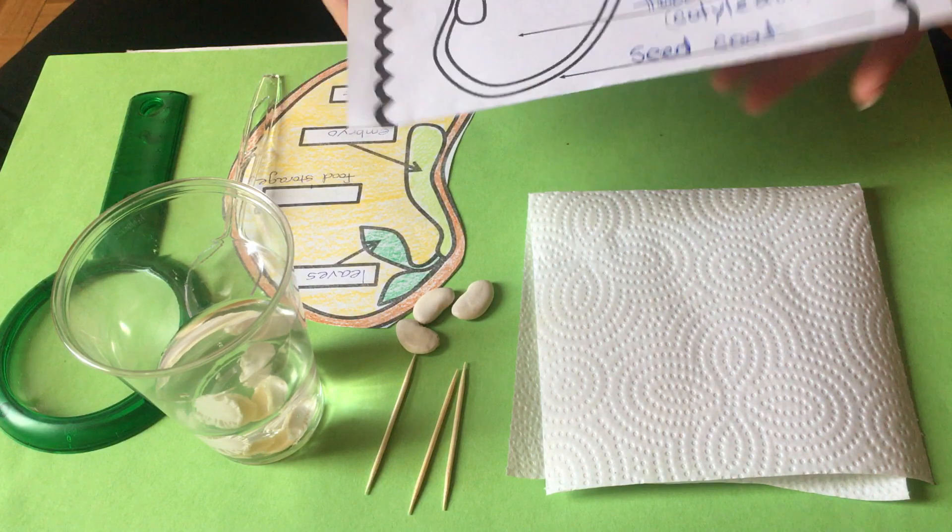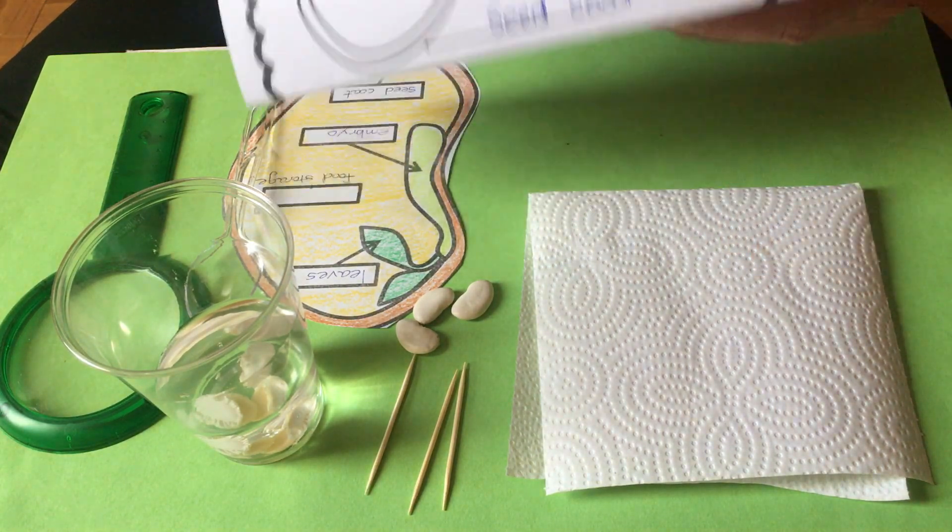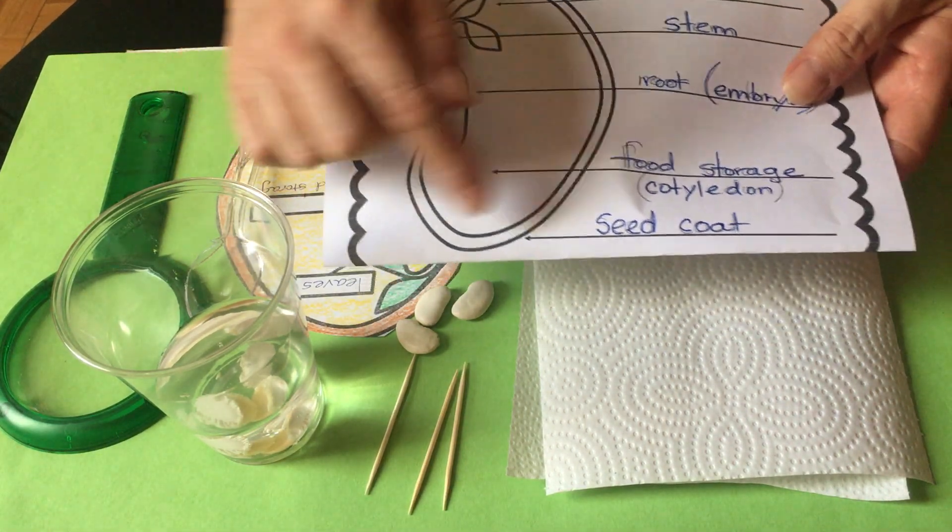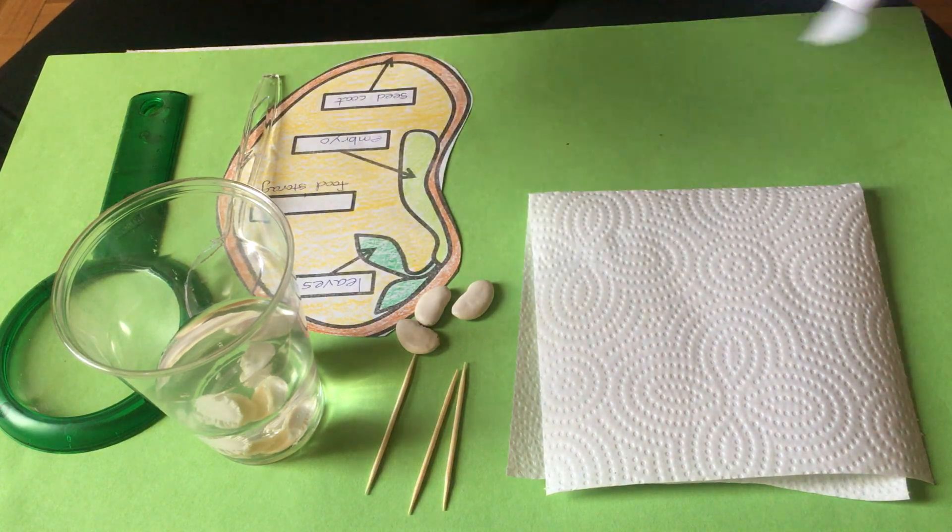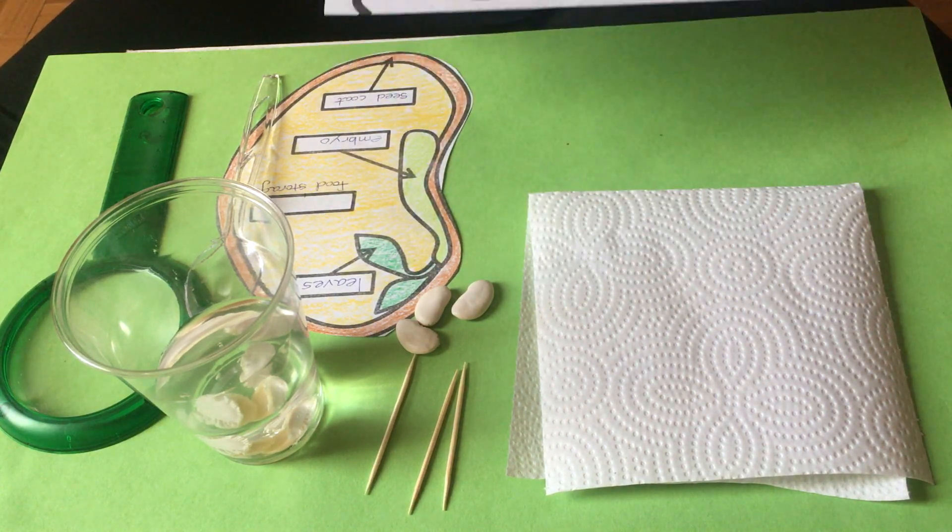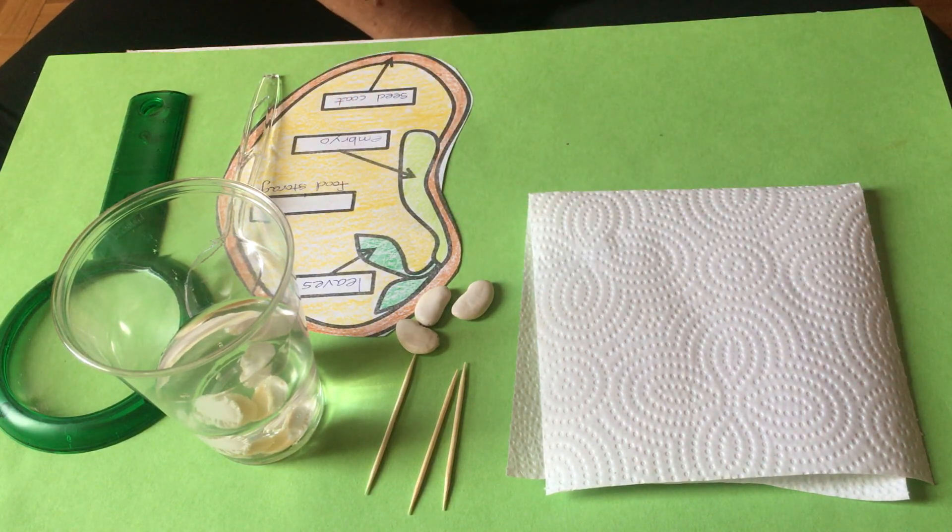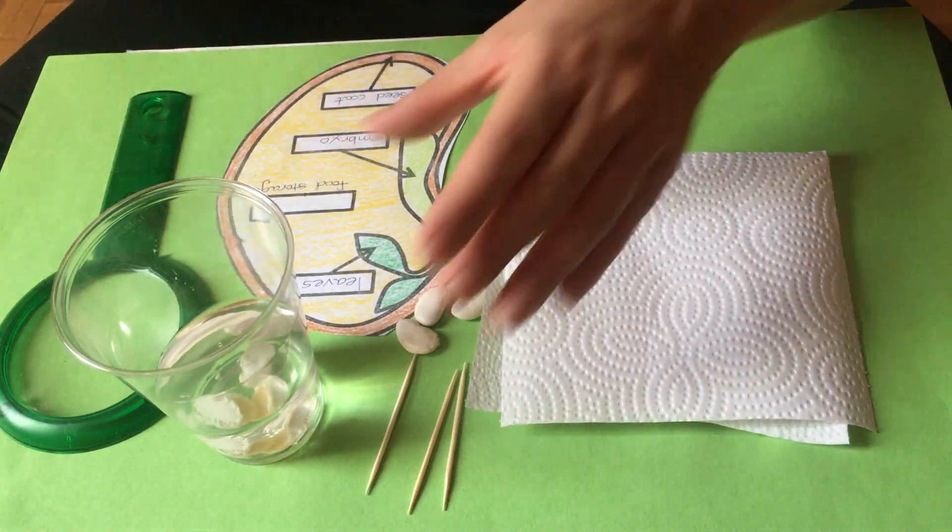Then you have a seed diagram that we're going to label with the word bank. I have a little color picture here after we look at what's on the inside of the seed. That is your activity, this is your experiment, and this is your lab sheet for today. Those are your supplies. We're going to take out our lima beans.